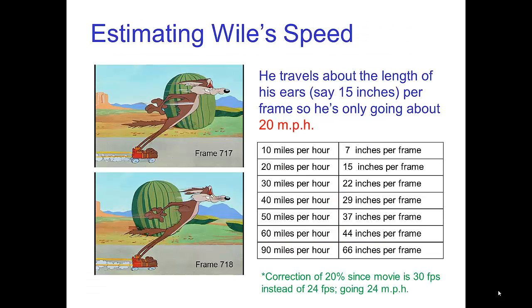Let's estimate Wile E. Coyote's speed. He travels about the length of his ears, say 15 inches per frame, so he's only going about 20 miles per hour.